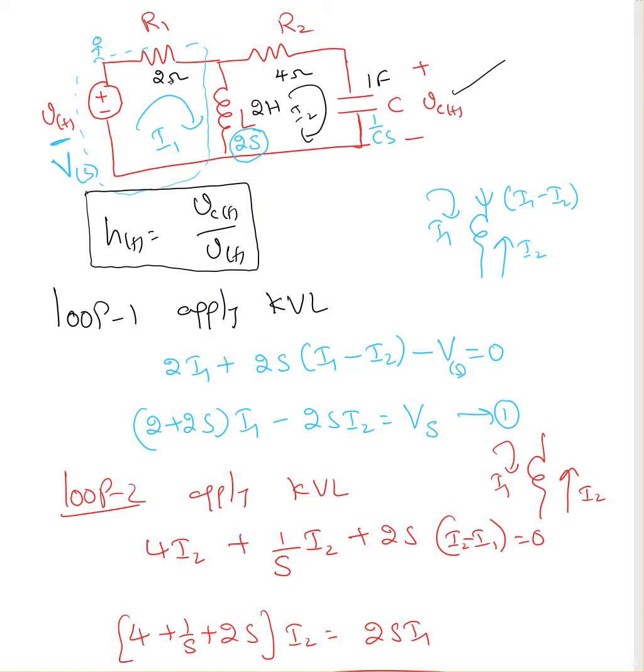Now, loop 1, I1 current is passing through loop 1, I2 current is passing through loop 2. Start at one point, come back to the same point without touching any element more than once. That's called a loop, right? So I'm going to go through this.